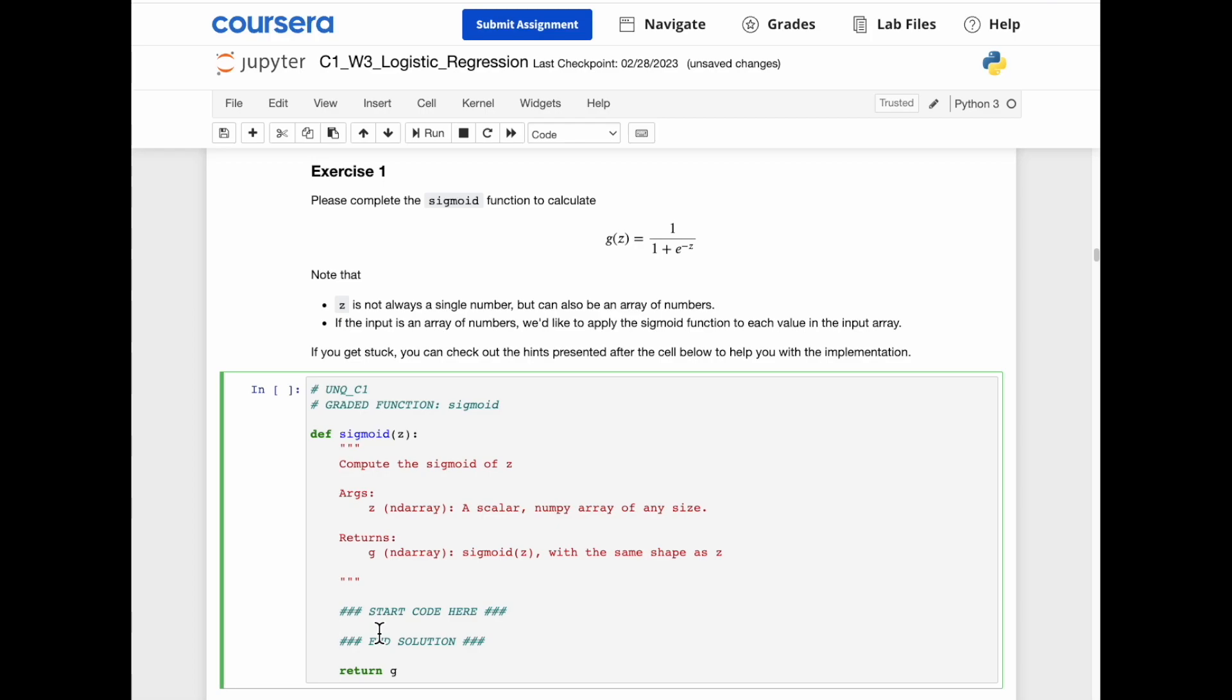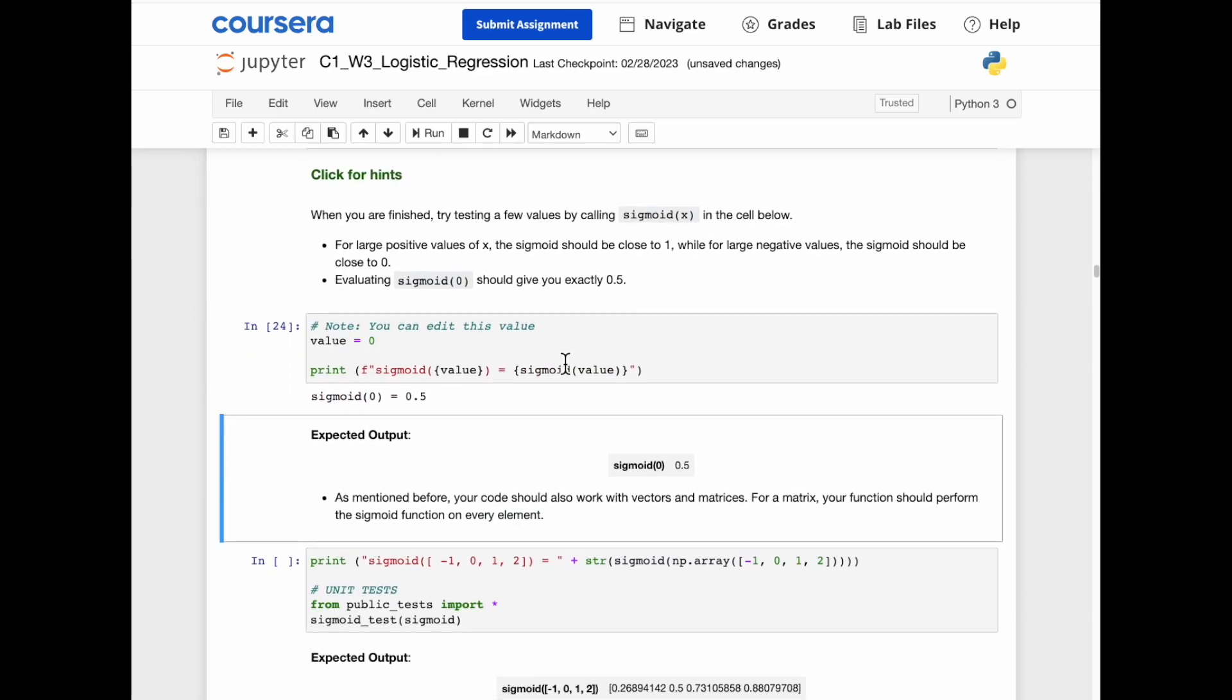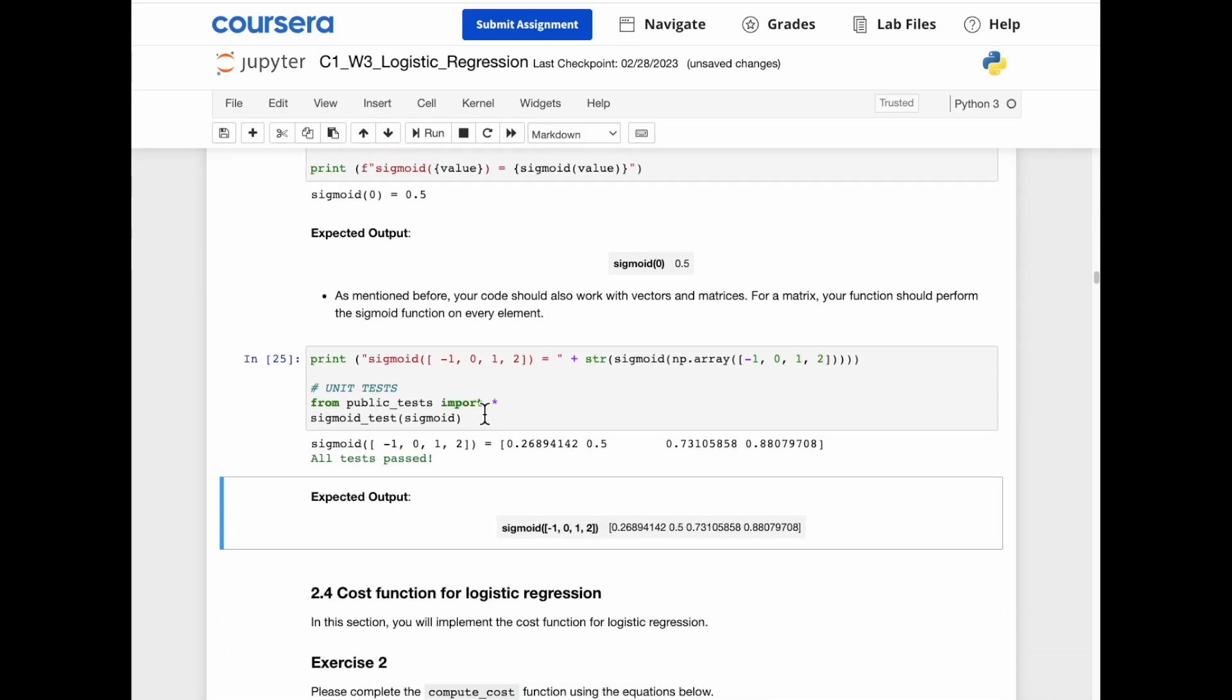And we'll do that right now. So we want to return g, which is another array with the same size as z. So g will be equal to 1 over 1 plus e to the negative z. And we'll use the numpy function, exp, np.exp, which takes e to the negative z. And we'll run it. And we got what we expected, 0.5, for a value of 0. And all tests passed.